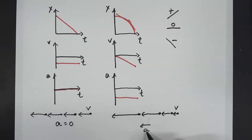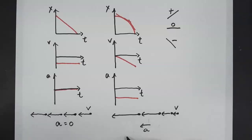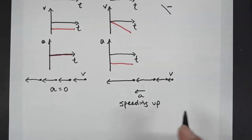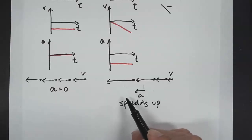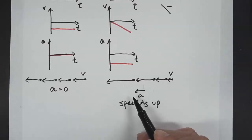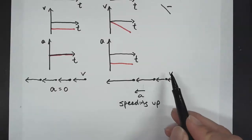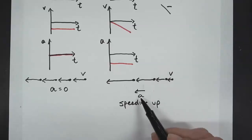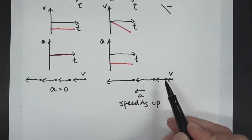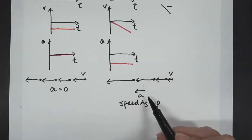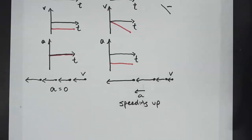A negative acceleration tells us that if the velocity is also negative, the object will be speeding up. If the velocity is to the right and the acceleration is to the left, then it would slow down. In general, if the velocity and acceleration are in the same direction, it'll speed up. If the velocity and acceleration are in opposite directions, it'll slow down.